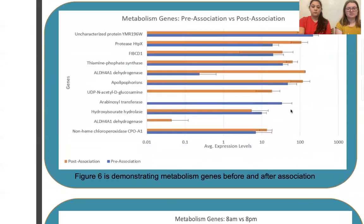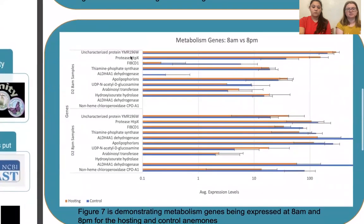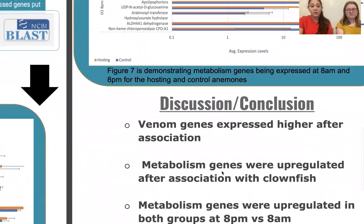Since we found significant results, we could compare gene expression at 8am versus 8pm, with 8am samples on the top of the graph and 8pm samples on the bottom. Genes are on the y-axis and average expression levels on the x-axis, with hosting in orange and control in blue. In the 8am samples, some genes were not expressed but were expressed at 8pm, and were more upregulated by the control group than the hosting. At 8am, the hosting group was more upregulated, while the control group was more upregulated at 8pm.